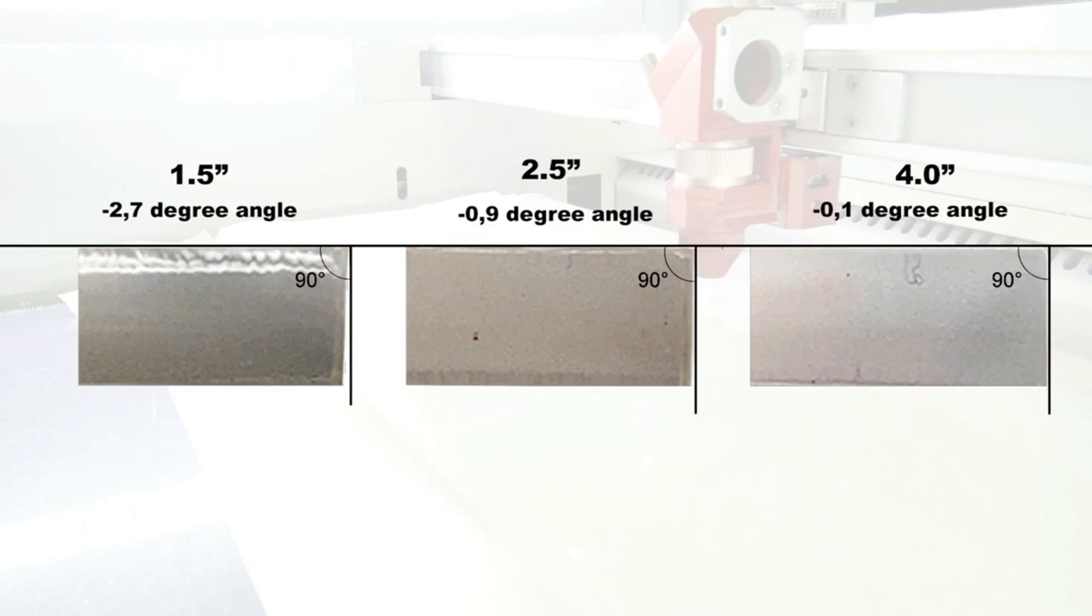When using the 1.5-inch lens, we can clearly see that we have an angle on the cut. With a 2.5-inch lens, the angle is smaller but still there. If we look at the 4-inch lens, we can see that there's pretty much no angle at all.